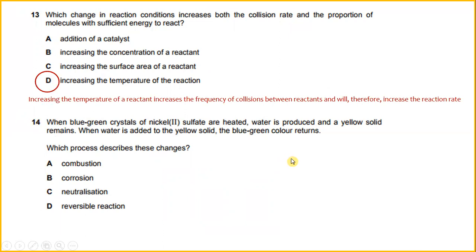When blue-green crystals of nickel-2-sulfate are heated, water is produced and a yellow solid remains. When water is added to the yellow solid, the blue-green color returns. Which process describes these changes? So the answer for this will be reversible reaction, D.